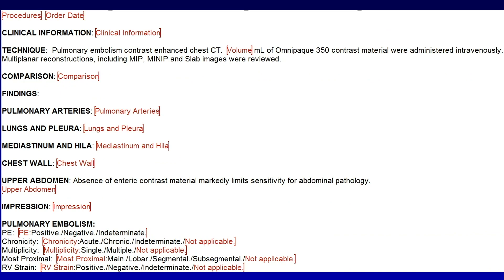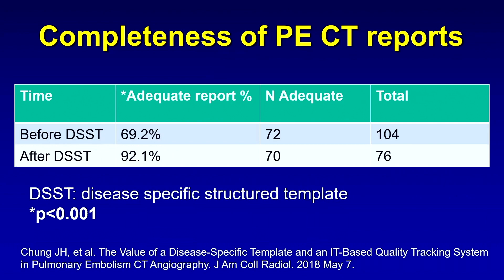They then created a new disease-specific template, which is quite similar to the original template, except for the portion after the impression, which contains the findings they wanted to ensure were discussed in all pulmonary embolism CT reports — ranging from whether it was positive, negative, or indeterminate, as well as the presence of right ventricular strain. There was a substantial and statistically significant increase in the completeness of CT pulmonary embolism reports after inception of their PE-specific CT template, from a baseline of 69% to an immediate post-intervention rate of 92%.